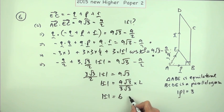That cancels, that goes down to 3, root 3 times 2 is 6. So there's the last mark, the length of that side, the magnitude of that vector is 6.